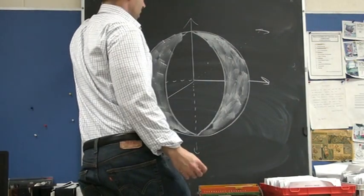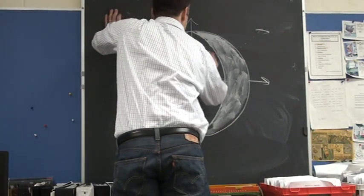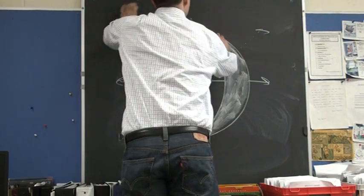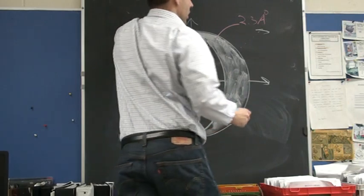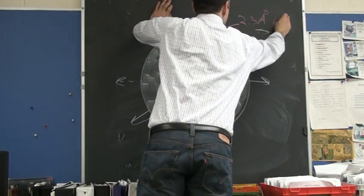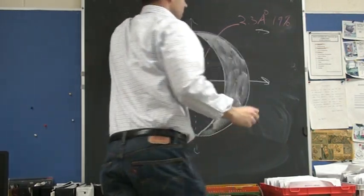This is the outer sphere. The outer sphere has a radius of 2.3 angstroms and it's got a likelihood of 19% of finding the electron there.